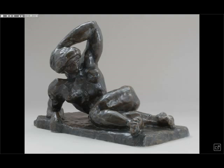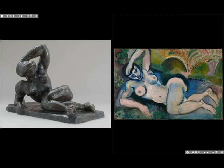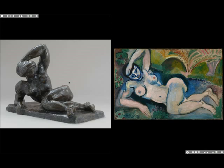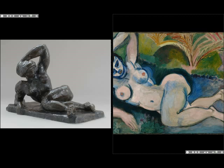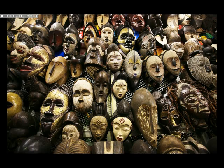Matisse was also at the same time treating the reclining female figure in sculpture, and you get the sense that he was trying to translate the forms of his sculpture into painting — you can see the equivalent between the very blocky upturned hip in the sculpture and features in the painting. Matisse is really one of the great painter-sculptors, and these two art forms would exist in dialogue throughout his career.